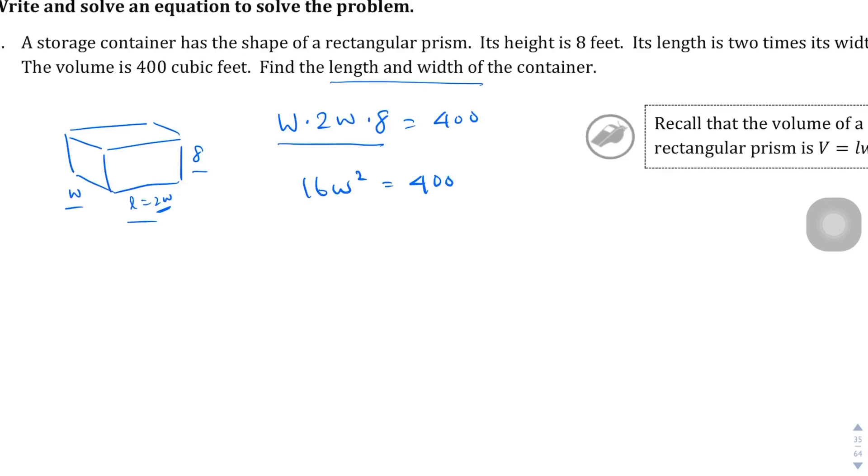We're right where we need to be in finding the length of the container. Dealing with this equation right here, let's go ahead and solve it like we did in the previous video. We're going to divide both sides by 16. When we do that we get W squared equals, oh my goodness, what is 400 divided by 16? 400 divided by 16 is 25. That's nice. We get W, when we square root it, by the way, W equals plus or minus 5.